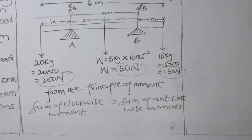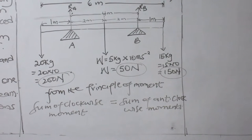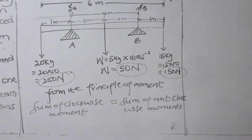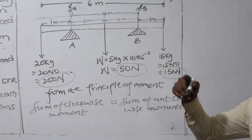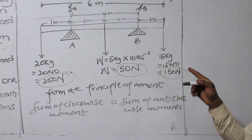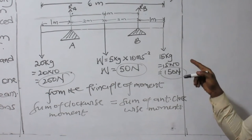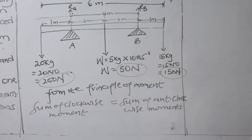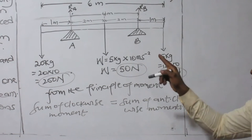We have to consider one at a time, because a moment is defined as the product of the force and the perpendicular distance to the line of action or to that point. So you can't consider column A and column B at the same time — it should be one at a time. So when you take moment about A...